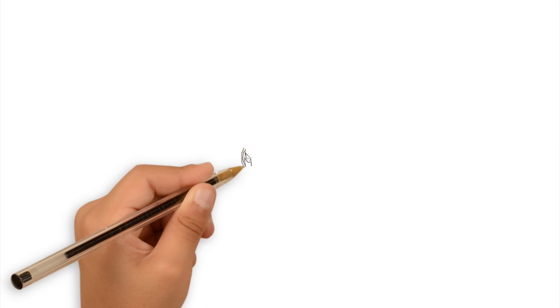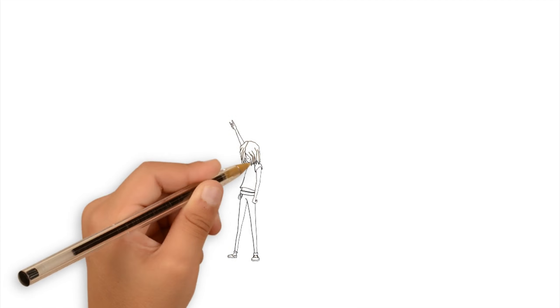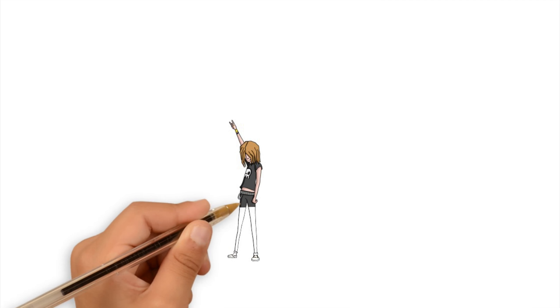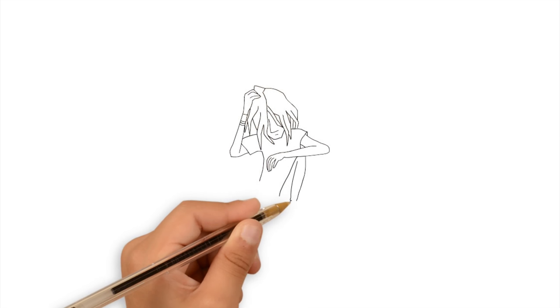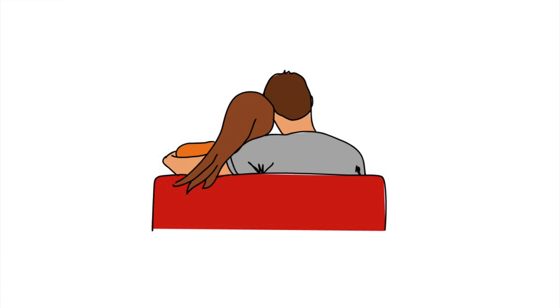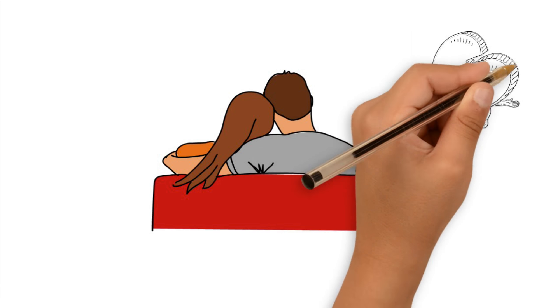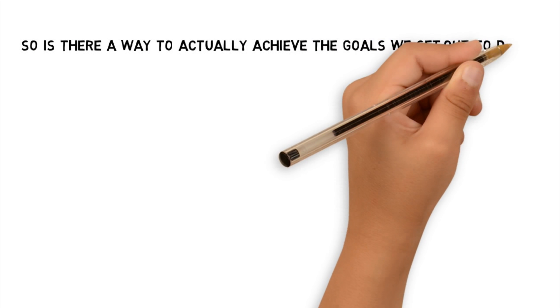The goals could also be school-related. Every year my students come into my class and tell me about their academic goals. This is the year I'm gonna work my ass off and get straight A's. Then like two weeks into the semester it all falls apart. I mean I guess the goals could also be social, something nice like I don't know, like finding someone to fall in love with. Good luck with that one. So is there a way to actually achieve the goals we set out to do?